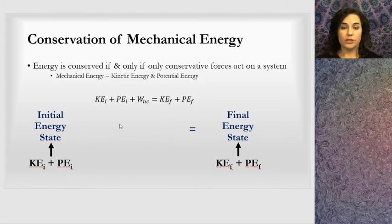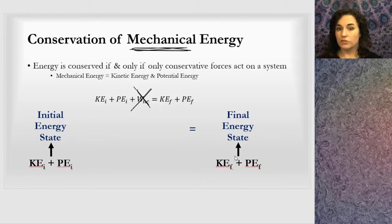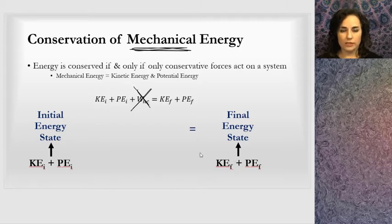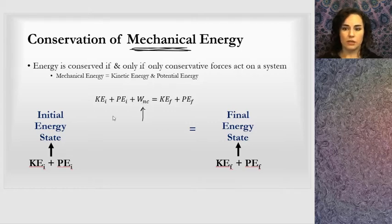Conservation of mechanical energy is the technical term for when we get rid of the non-conservative forces - when non-conservative forces don't contribute. Mechanical energy is defined as kinetic energy plus potential energy. This is more of the general physics concept where we're looking at just initial and final potential and kinetic energy. But it's important to take into account any energy in or out of the system if it happens to be there.